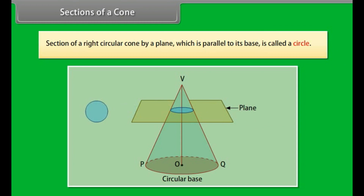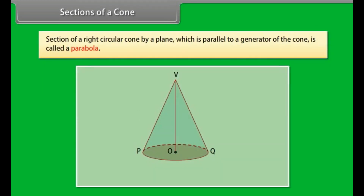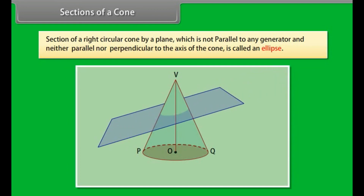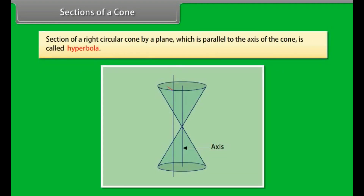Section of a right circular cone by a plane which is parallel to its base is called a circle. Section of a right circular cone by a plane which is parallel to a generator of the cone is called a parabola. Section of a right circular cone by a plane which is not parallel to any generator and neither parallel nor perpendicular to the axis of the cone is called an ellipse. Section of a right circular cone by a plane which is parallel to the axis of the cone is called a hyperbola.